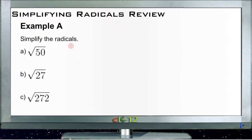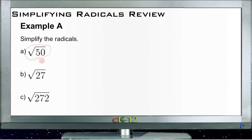Example A, simplifying radicals, asks us first to simplify the square root of 50. The square root of 50 is not even — the square root of 49 is — so obviously the square root of 50 is going to be something just a little bit more than 7.